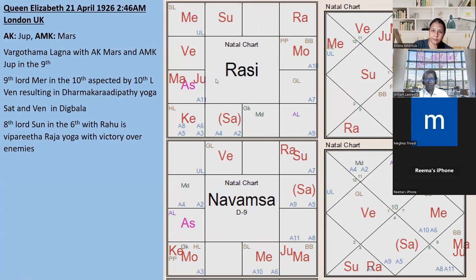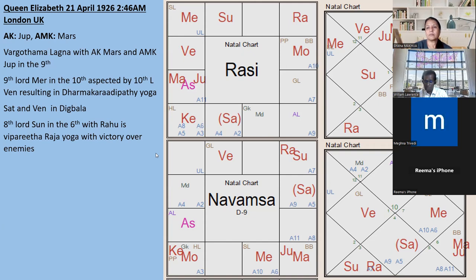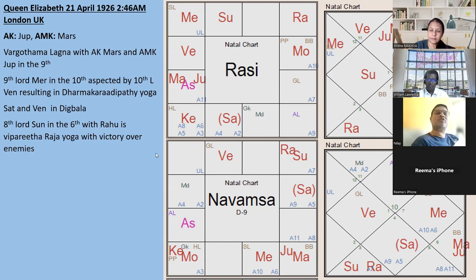Now Queen Elizabeth's horoscope - a similar combination. Look at the Rasi chart: again it does not obviously show she's a queen who ruled for a very long time. Without seeing the Navamsa, judging a horoscope from the Rasi chart alone can be extremely misleading. But in the Navamsa - Vargottama lagna, Venus the tenth lord, Mercury the ninth lord creating a Dharma-Karma yoga, Saturn in Kendra. The Atmakaraka and Amatyakaraka are in the ninth house - the same powerful yoga.